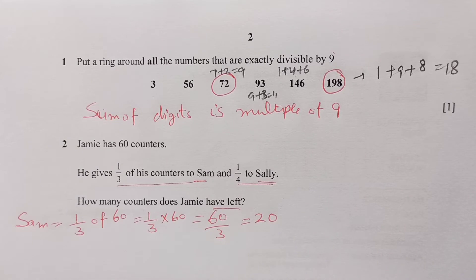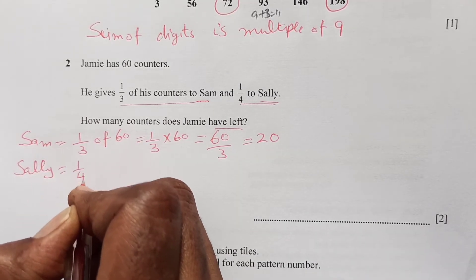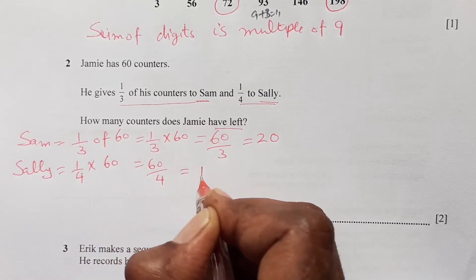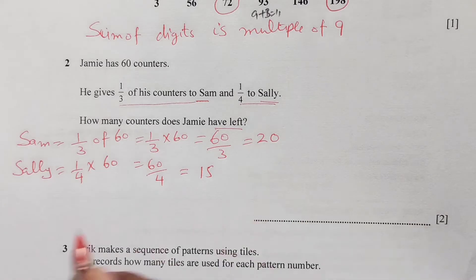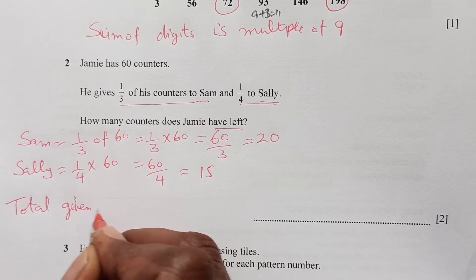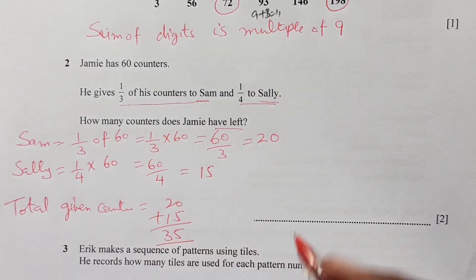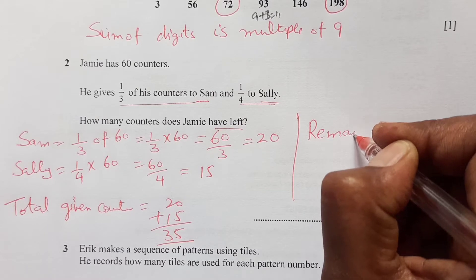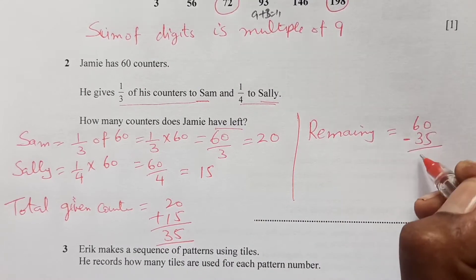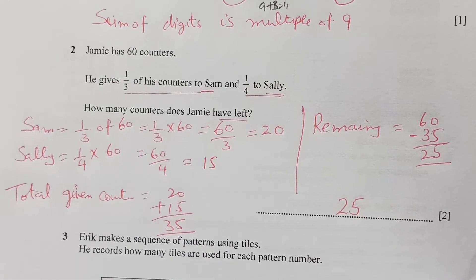Sally was given one-quarter of sixty, so that is sixty divided by four, which is fifteen. Total counters given away is twenty plus fifteen, which is thirty-five. The remaining number of counters is sixty minus thirty-five, which is twenty-five. So our final answer is twenty-five.